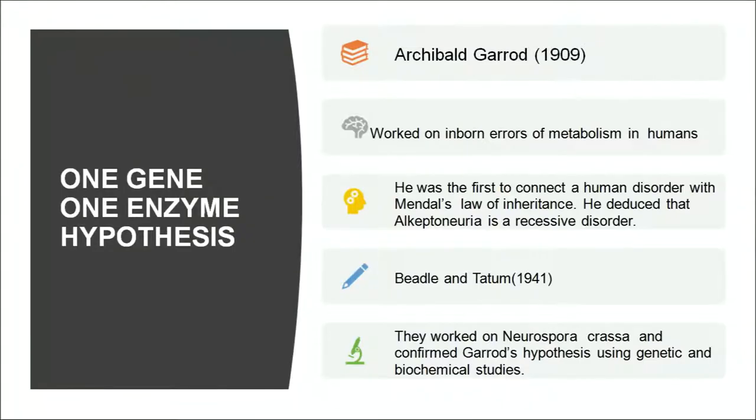What is meant by the one gene, one enzyme hypothesis? Archibald Garrod, a British physician, wrote a book on inborn errors of metabolism in human beings. He was working on a disease alkaptonuria. Inborn errors are when a person suffers from a disease right from birth, having carried it from parents. In alkaptonuria, it is a recessive disorder.